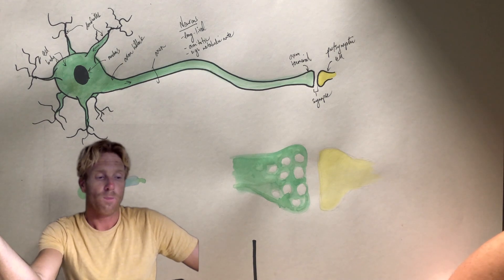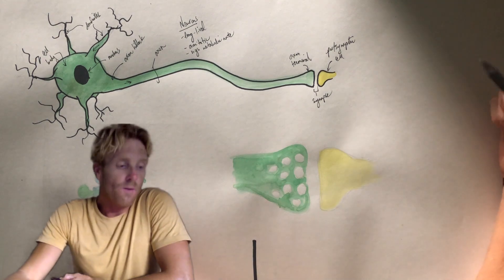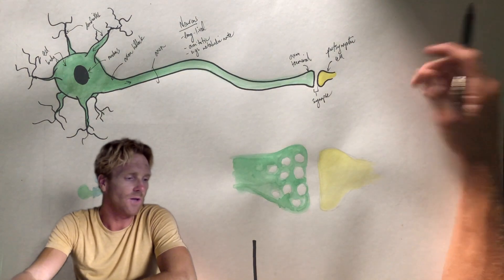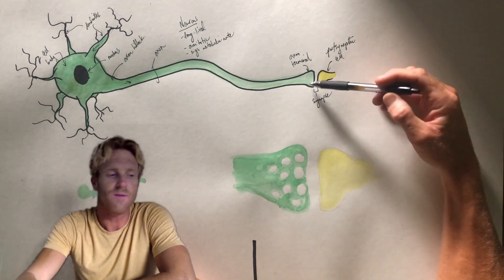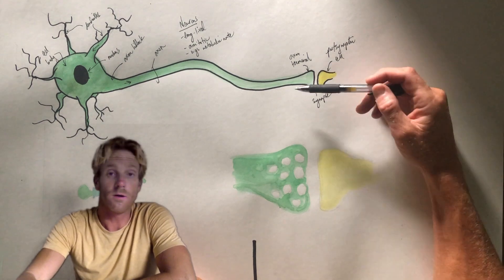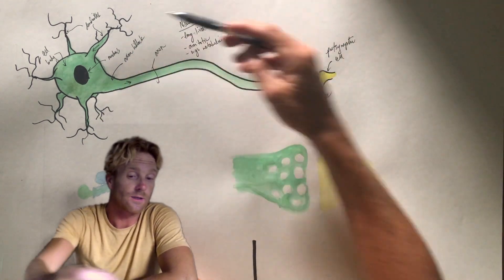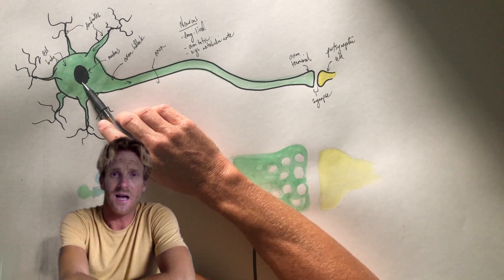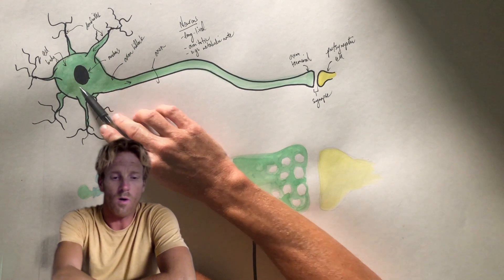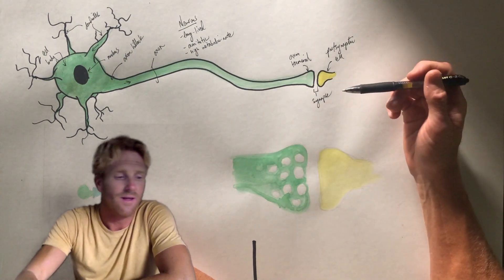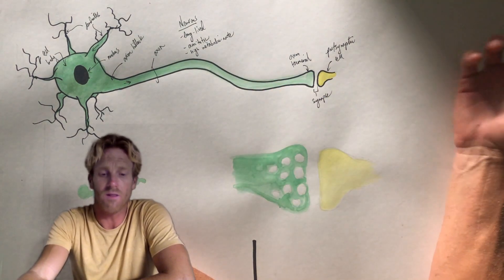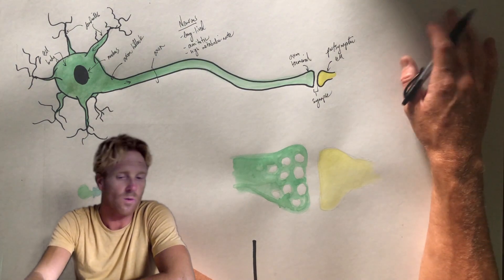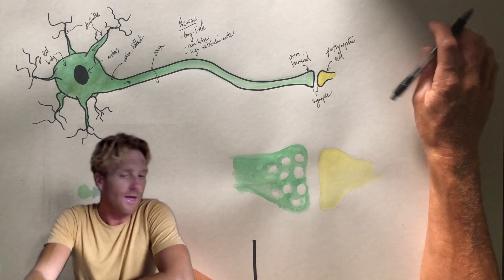Sometimes these axons are really long. For example, muscle fibers in your lower leg, like in your gastrocnemius muscle, are innervated by motor neurons whose cell bodies lie in the spinal cord. The axon leaves the spinal cord and travels all the way down to the calf muscle, meaning the axon could be two to three feet long. Not all axons are that long, but many are.